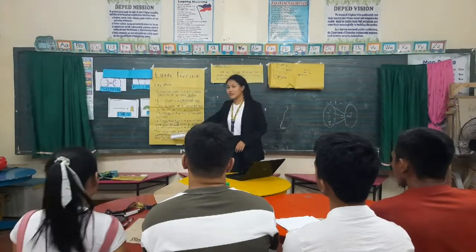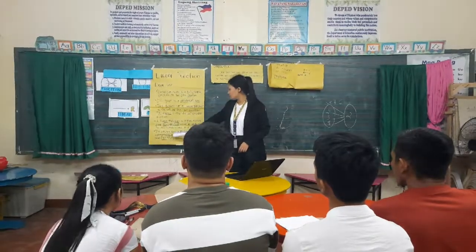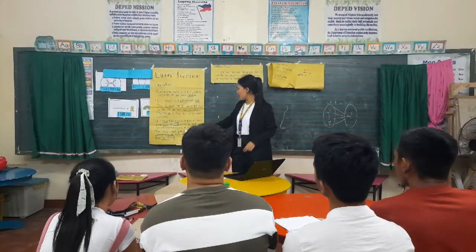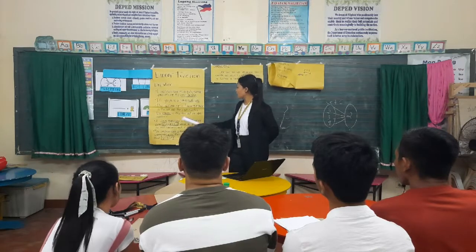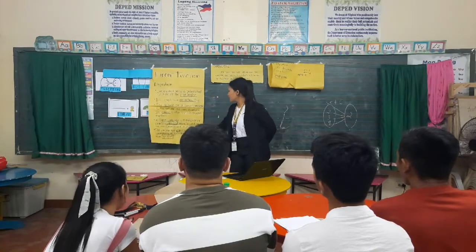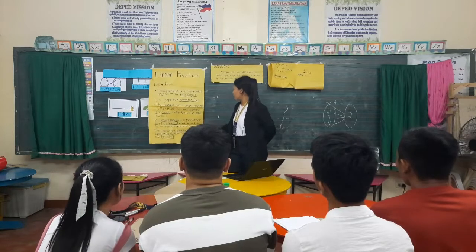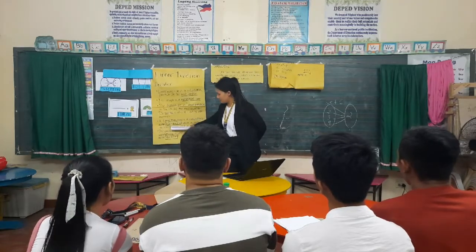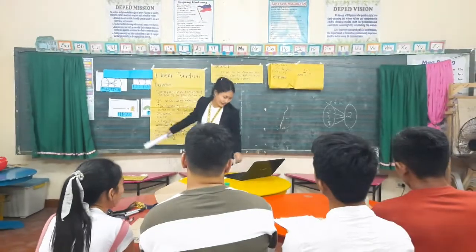A linear function is a function of the form f(x) = mx + b, where m and b are real numbers and m is not equal to 0. If the function form y = mx + b is used, it is the same as f(x) = mx + b, since y = f(x).